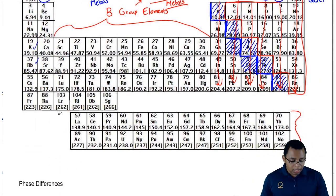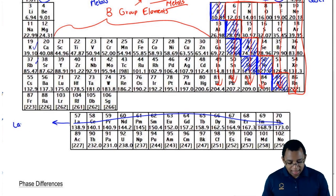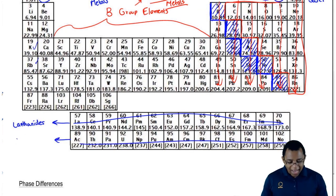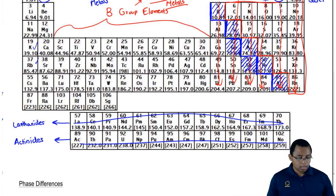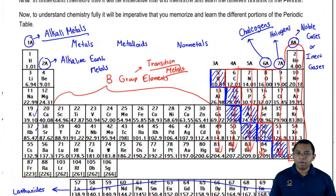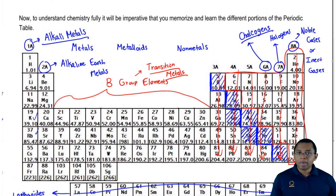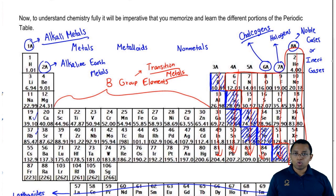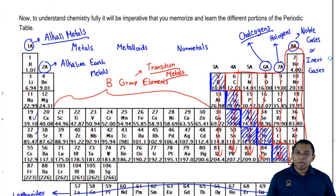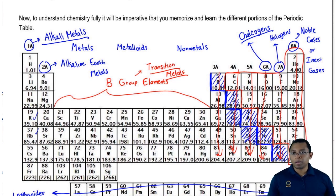These two rows also have names. This row here is called your lanthanides, and this row here is called your actinides. They're also transition metals but they have special names associated with them. To summarize: we've seen the division of the periodic table in terms of metals, metalloids, and nonmetals. Groups go vertical. Groups 1a to 8a are your representative elements or main group elements, and a majority of them have a special name. In the pit, we call those our transition metals or group B elements.